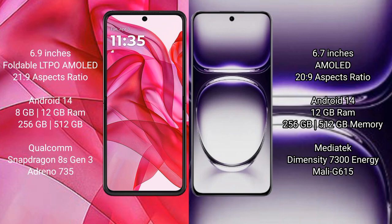The Motorola Razr 50 Ultra runs on the Android 14 operating system, as does the OPPO Reno 12. The Motorola Razr 50 Ultra comes with 8GB or 12GB RAM and 256GB or 512GB internal storage, powered by a Qualcomm Snapdragon 8s Gen 3 processor.